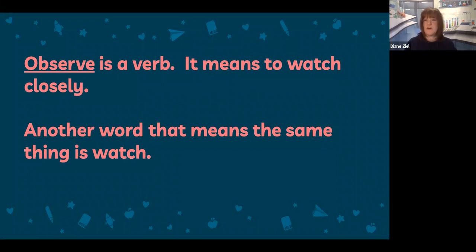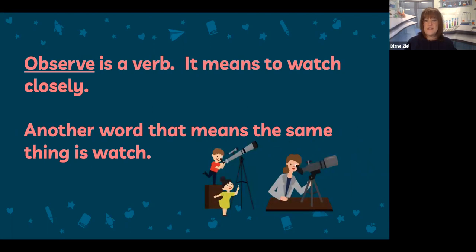Observe is also a verb. It means to watch closely. Another word that means the same thing is watch. Observe simply means to watch, but you're really paying attention. And as you're observing, you're doing that investigating and then determining things about what you're watching. For example, astronomers may use a telescope so that they can see the stars and constellations in the sky better. As they're making these observations, they may be investigating and determining things about what they're watching. Observe means to watch closely.